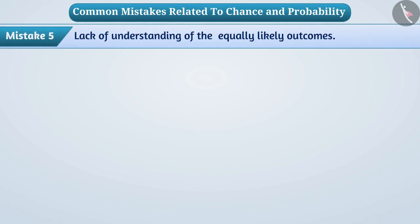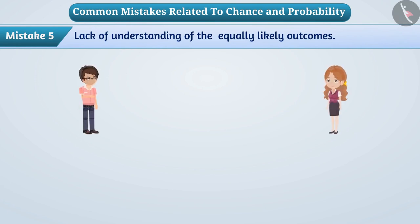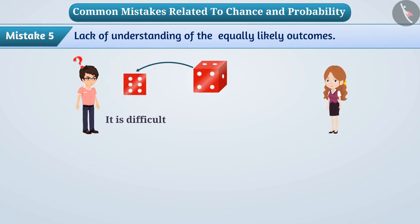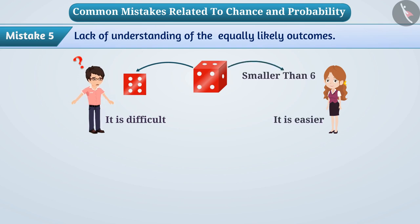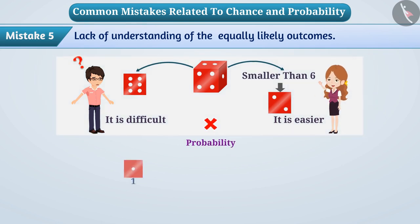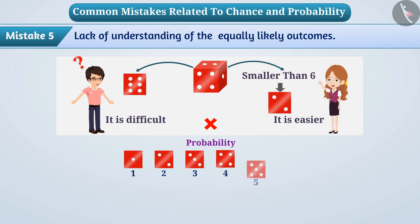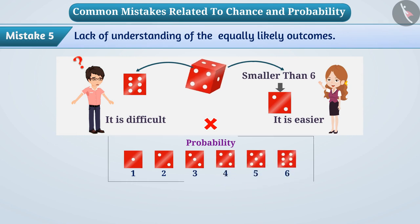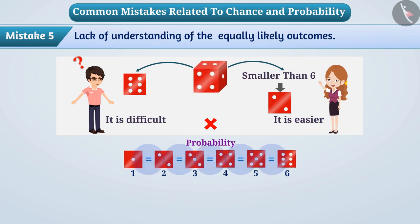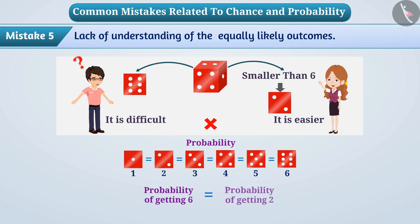Mistake 5: Lack of understanding of equally likely outcomes. Some children think that it is difficult to get 6 by throwing the dice, while it is easier to get a number smaller than 6, such as 2. This is a misunderstanding. The probability of getting 1, 2, 3, 4, 5, or 6 on throwing a fair dice is equal. So, the probability of getting 6 is as much as the probability of getting 2.